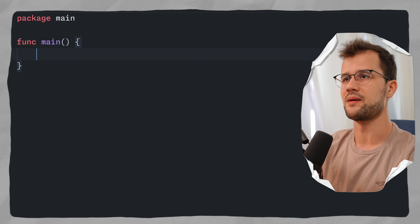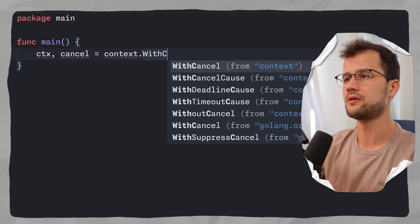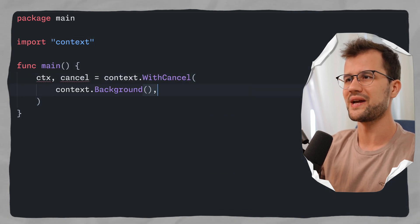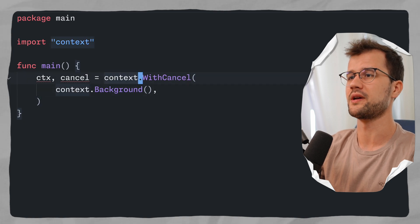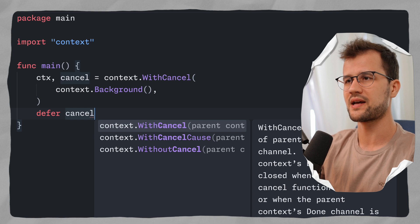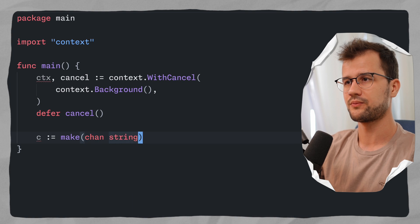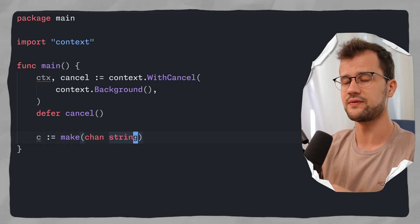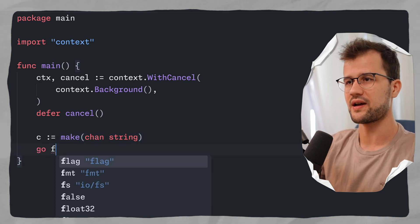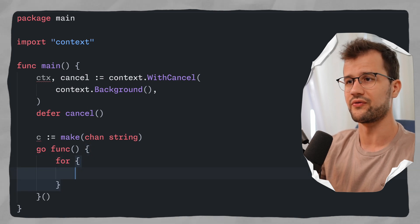Let's look at an example. We create a cancelable context with cancel using context.Background(), then call defer cancel. Then we create a channel of type string, so we can only receive and send strings through it. Next we create a goroutine which is automatically called, and inside it we have an infinite for loop.